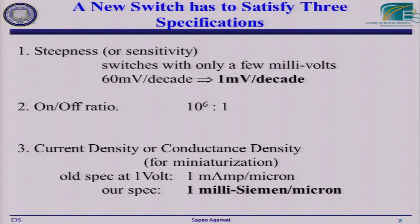We still need to have a high current density or conductance density. It used to be at one volt we'd want around a milliamp per micron to maintain high speed. But now since we're operating at a much lower voltage, we care about the RC time, and we want at least one millisiemen per micron. Current tunnel FETs have shown sub-60 mV/decade, but only at around a nanoamp per micron — off by six orders of magnitude. So the question is: why, and how can we get a steep turn-on at higher currents?